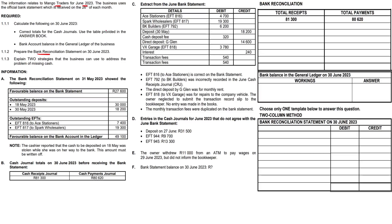So let us take a look at Mango Traders. The information relates to Mango Traders for June 2023. The business uses the official bank statement which is received on the 26th of each month. Calculate the following on the 30th of June 2023. We've got our cash journals, our bank account balance, a bank recon, and a theory question at the end.